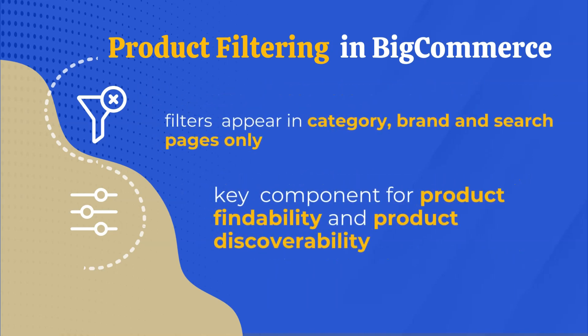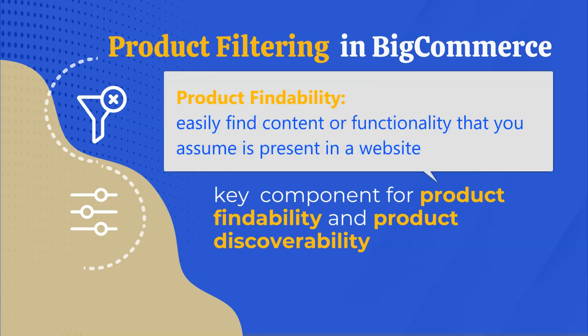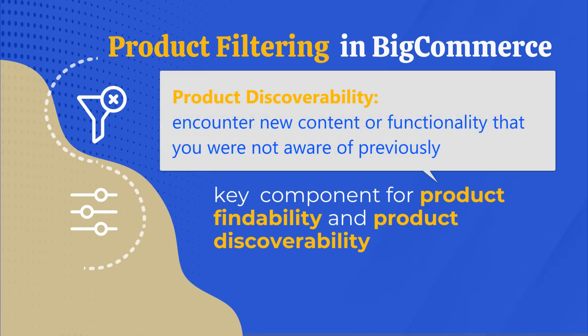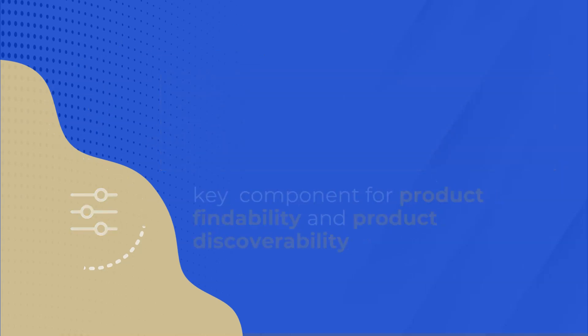Filters will appear on category, brand, and search pages only, and they are key components in the visitor's product findability and discoverability. When we say findability, we talk about how users can easily find content, functionality, or a product they are sure is present in your site. Discoverability is when users encounter new content or products that they were not previously aware of.